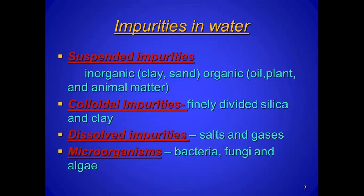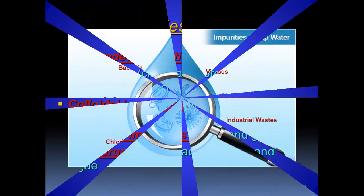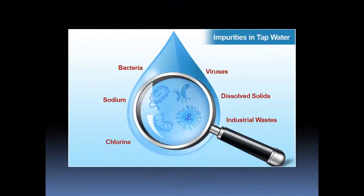All these are found in water and this is the reason that water is polluted due to these impurities. Impurities in tap water include: viruses, dissolved solids, industrial waste, chlorine, sodium and bacteria.